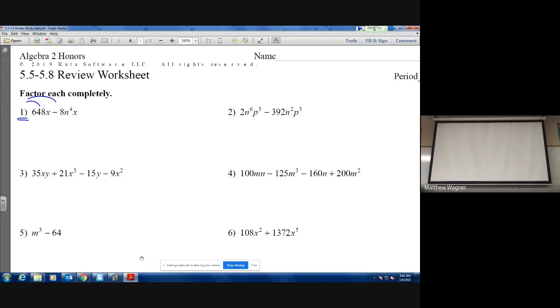As I look at this problem, I see 648x and 8n to the fourth x. I'm going to take out an 8x. In this case, 648 divided by 8 is 81, and then since I took 8x out, I'm left with n to the fourth.